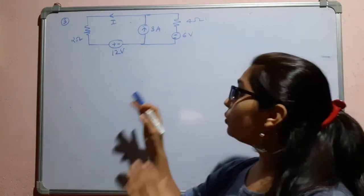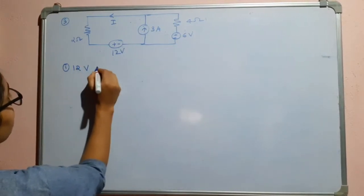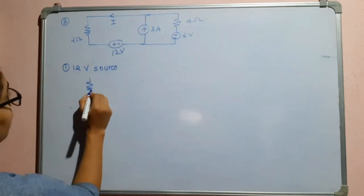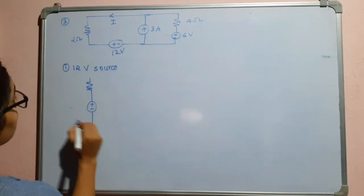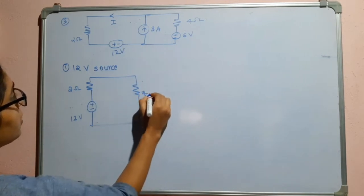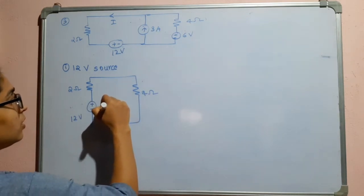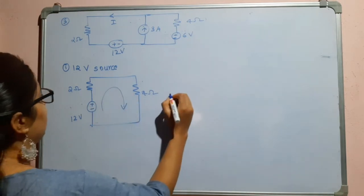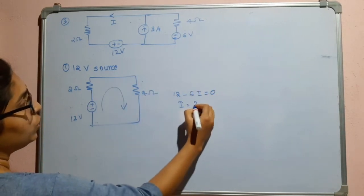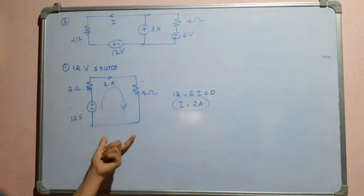Now let us take into consideration the 12 volt source. The current source will be open and the 6 volt source will be shorted. Redrawing the circuit, we have 12 volts, 2 ohms, and 4 ohms. Applying KVL: 12 minus 6i equals 0, so I is equal to 2 amperes. This 2 amperes is flowing in this direction — due to the 12 volt source.